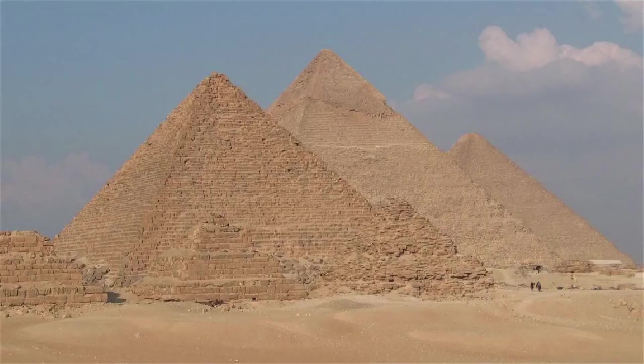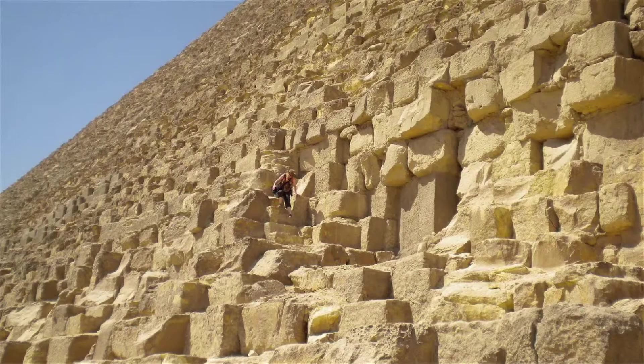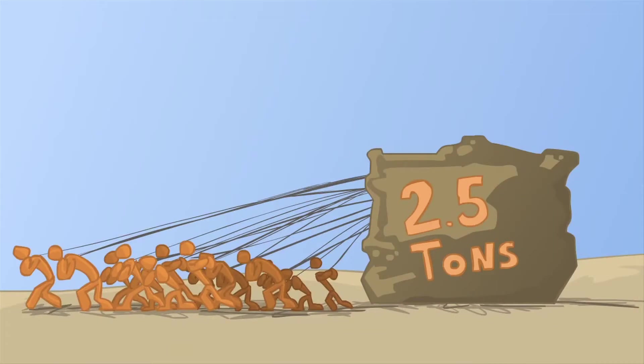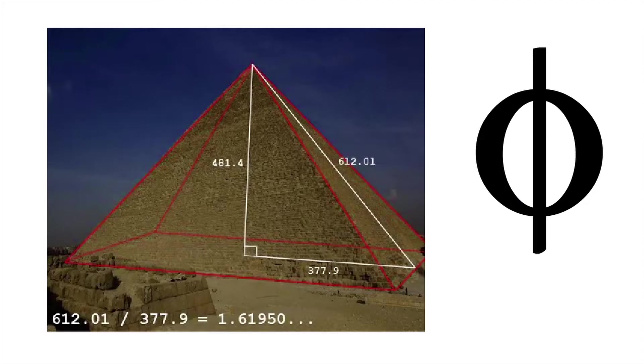For example, the Pyramids of Giza. There is no modern theory that accounts for how these could have been made. Individually, each block cannot be pulled even with 50 men pulling it, let alone drag it for hundreds of miles and then stack them on top of each other 450 feet in the air, in such a precise way that even modern technology can't achieve.